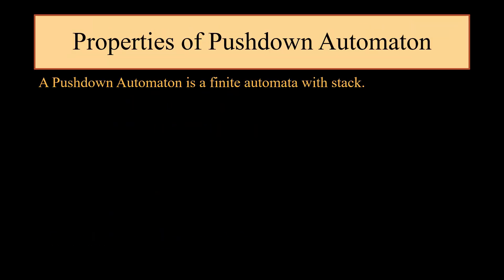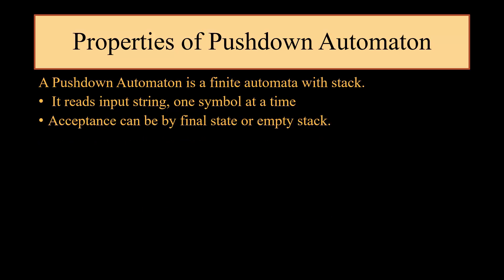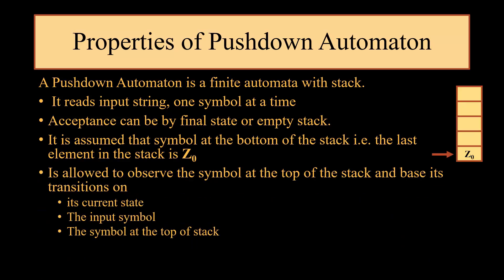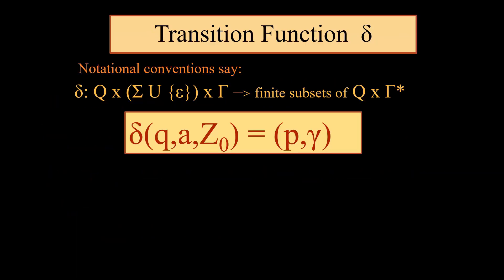Pushdown automata is a finite automata with a stack. It reads input symbols one at a time. Acceptance can be by final state or by empty stack. It is assumed that the symbol at the bottom of the stack is z0. The machine is allowed to observe the symbol at the top of the stack and base its transition on the current state, the input symbol, and the symbol on top of the stack.